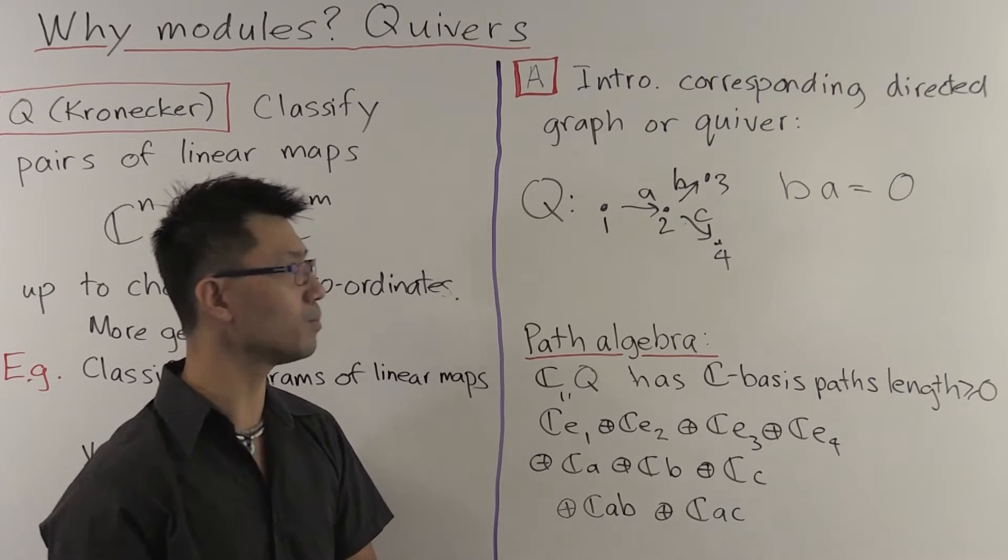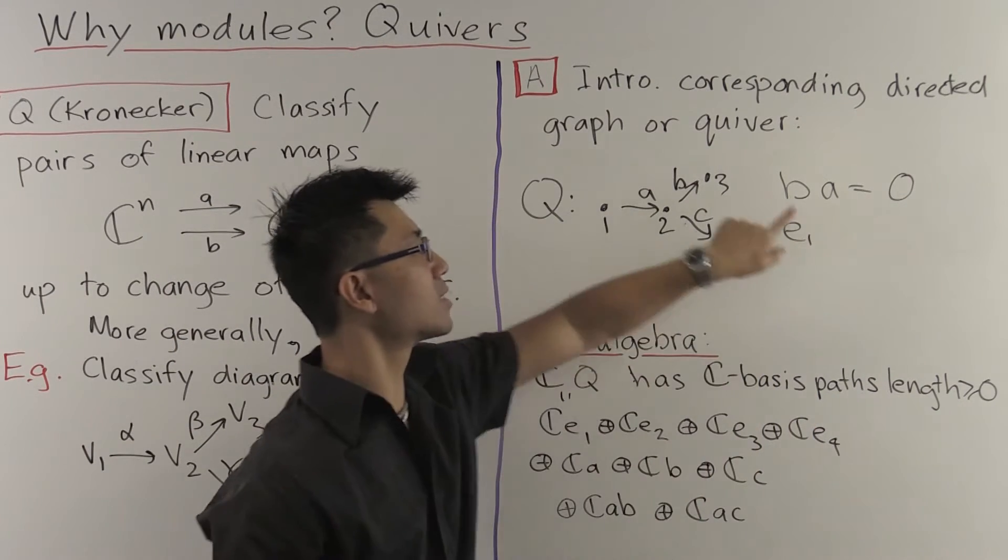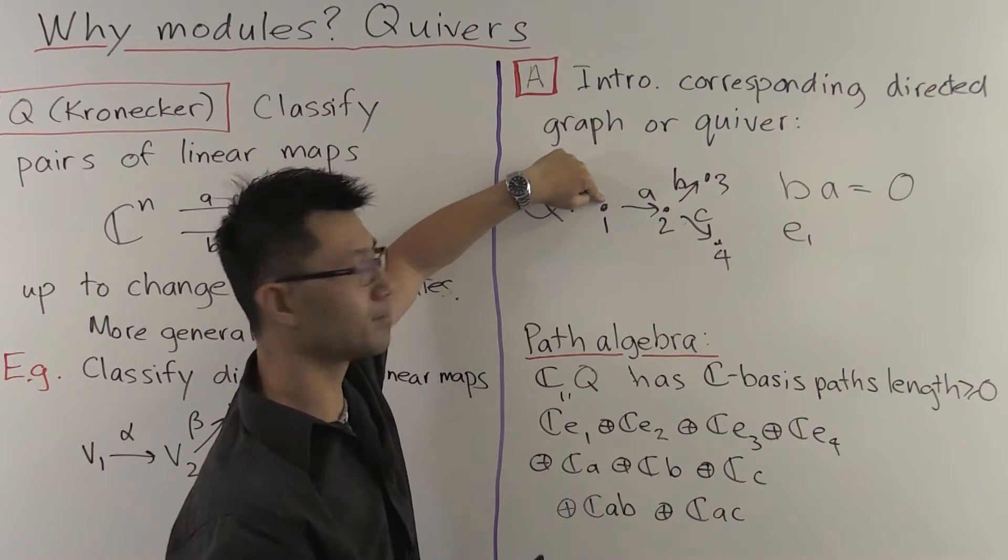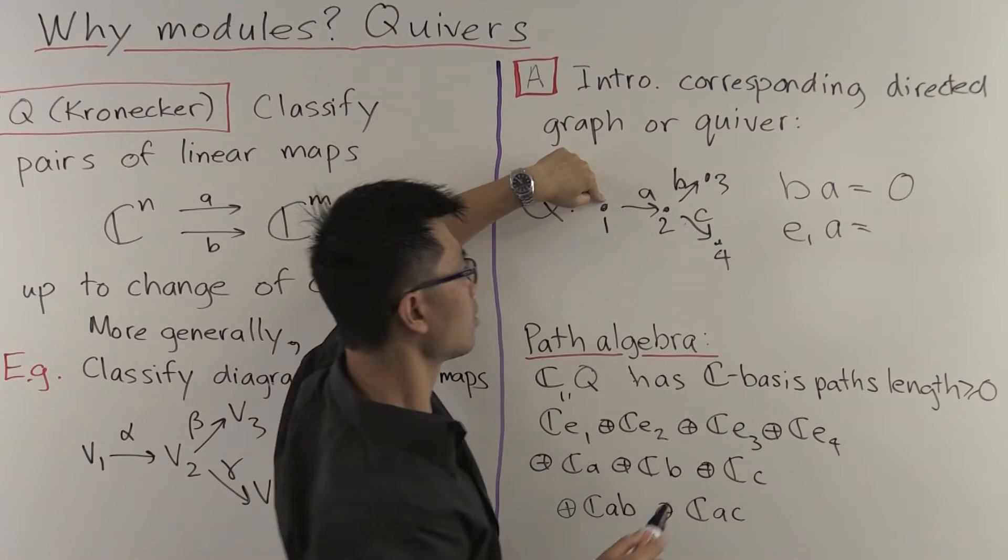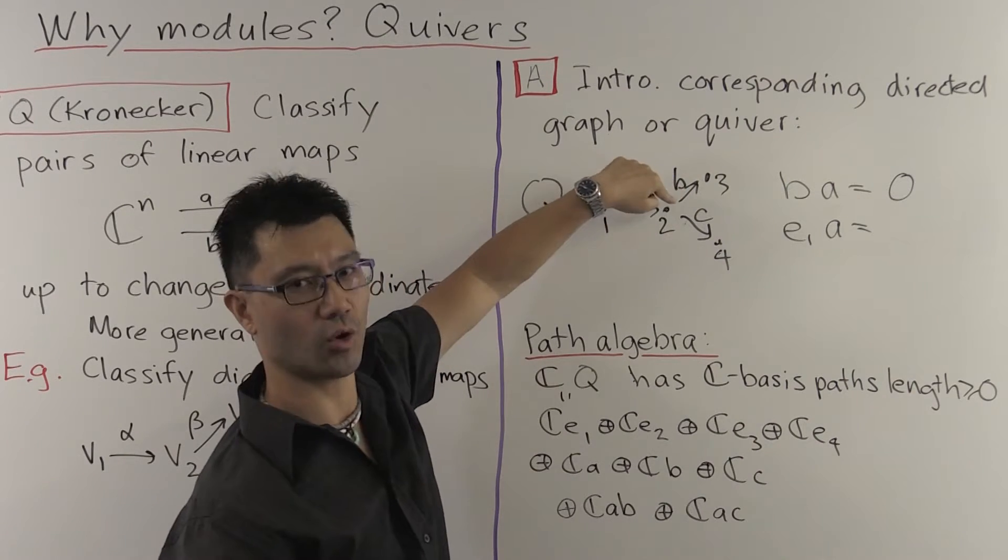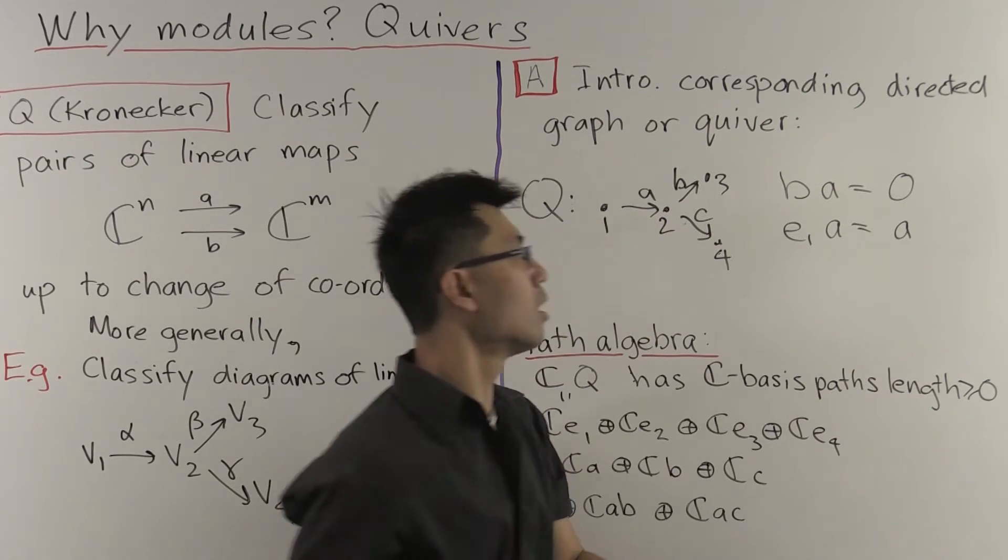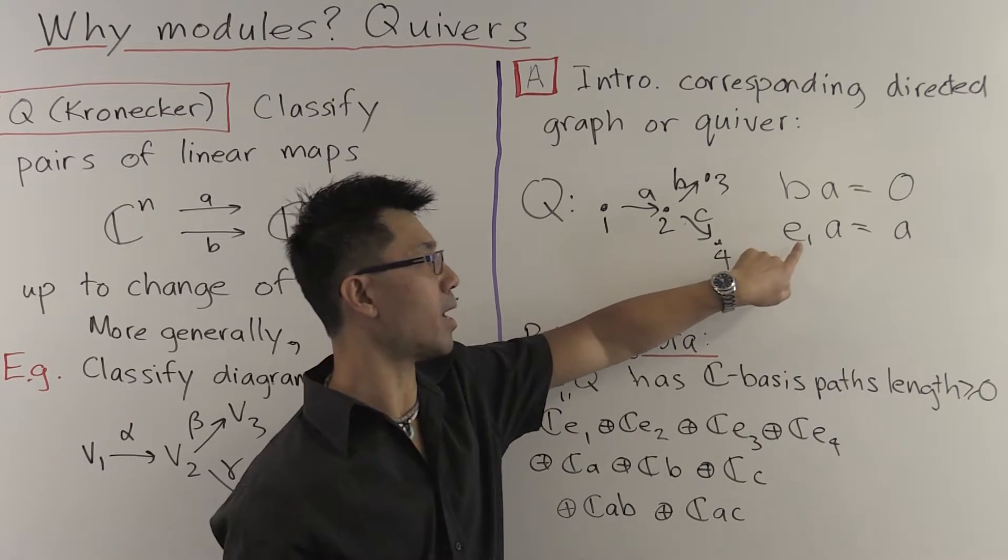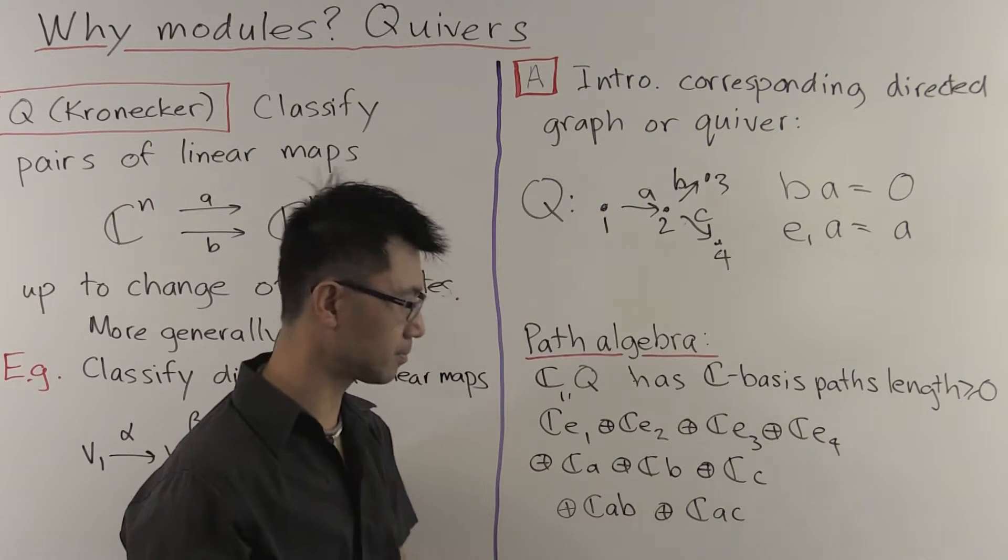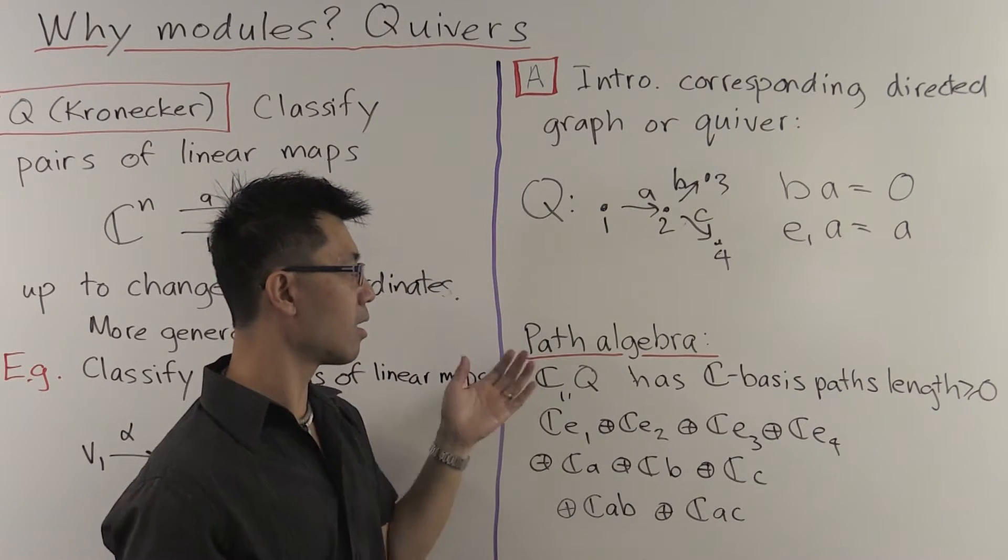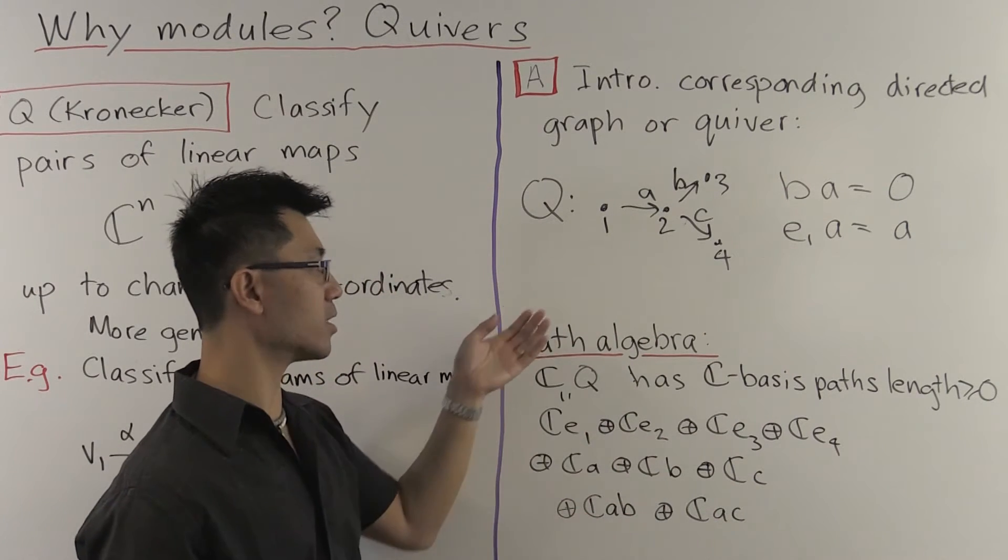So let's look at another example. E1 is the length 0 path from 1 to 1. And we concatenate that with A, going from here to here. Of course, that's just the length 1 path, A. So left multiplication by E1 on A leaves you at A.